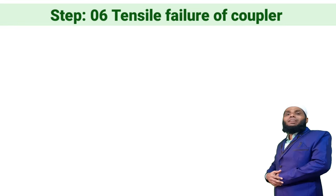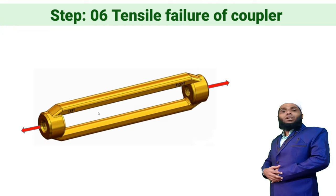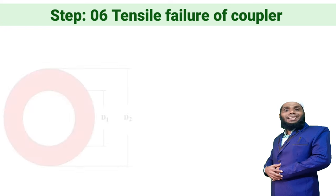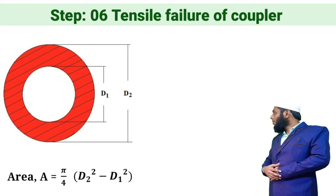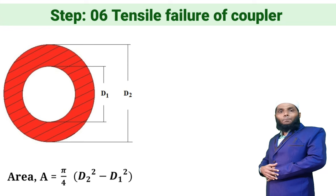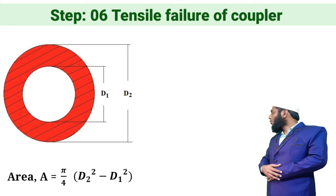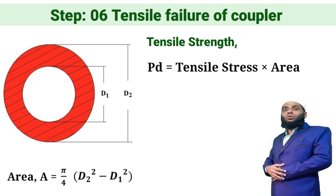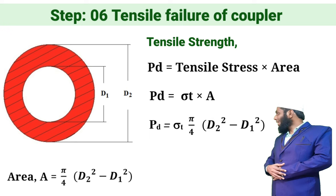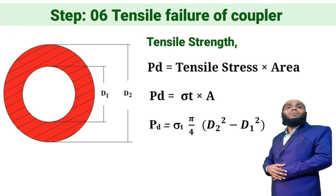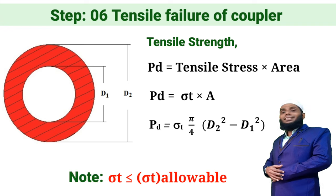Step number six is tensile failure of the coupler. Due to the applied tensile load, the coupler will fail perpendicular to the load. The area resisting this tension is: A = π/4 × (D2² − D1²), where D2 is the outer diameter and D1 is the inner diameter of the coupler. Substituting this, the tensile strength of the coupler is: PD = σt × π/4 × (D2² − D1²), where σt must be within the allowable tensile stress for the coupler material.